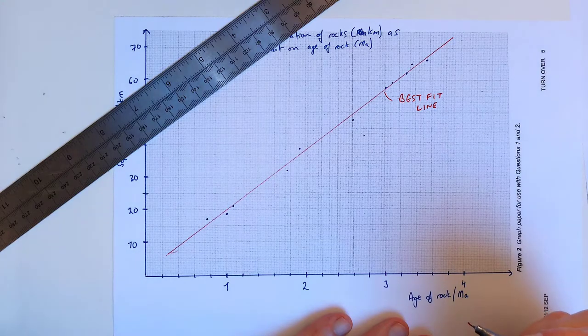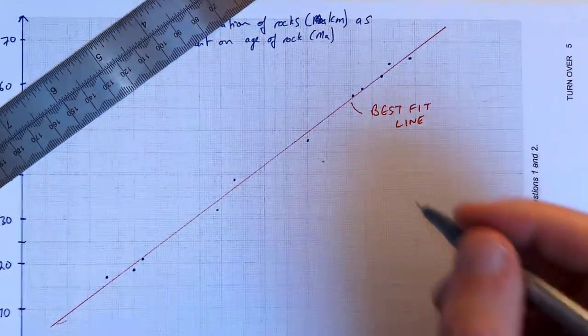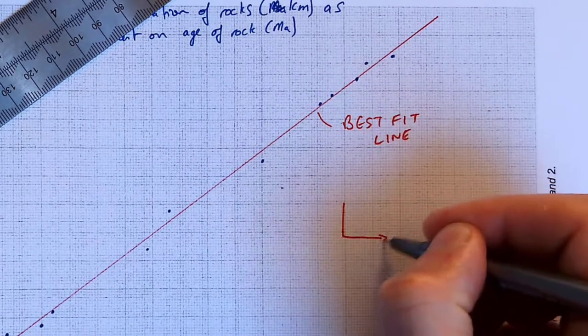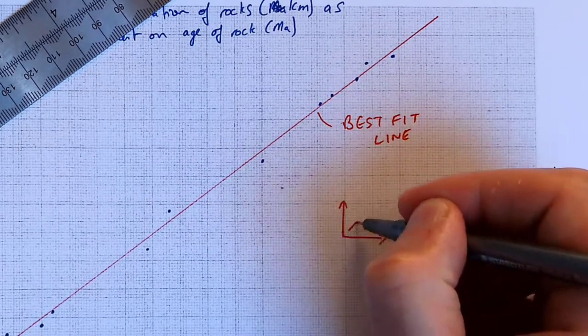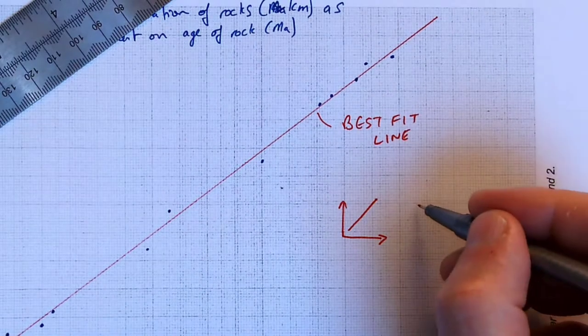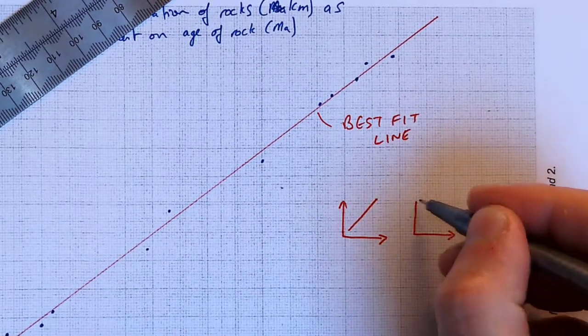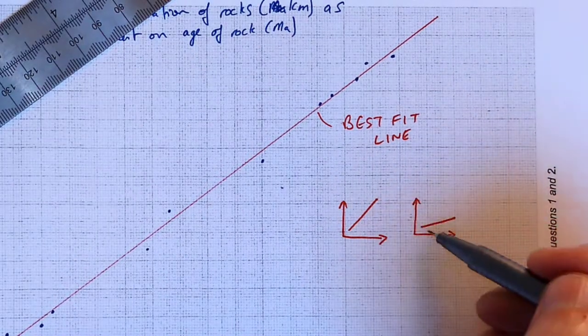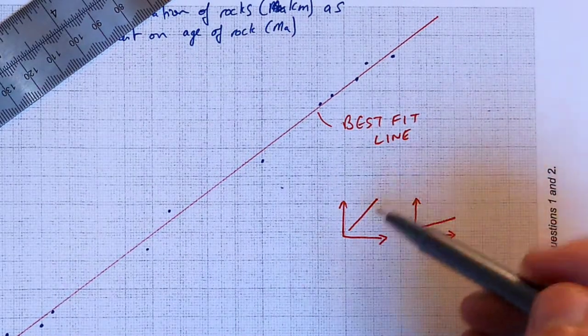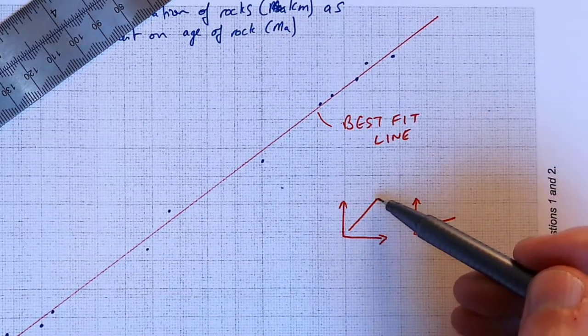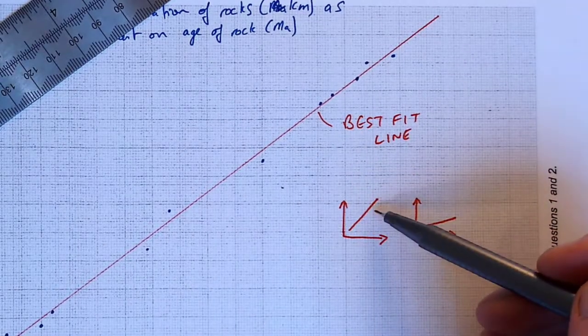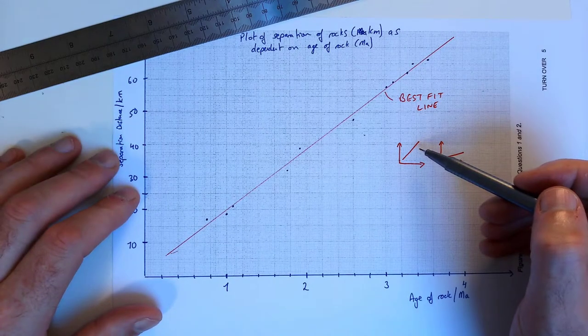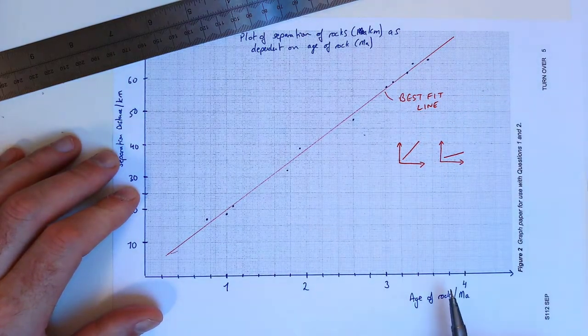And we can get some useful information from the best fit line, in other words the steepness of the line. I could have a line where this could be my graph here and that could be one particular steepness, or I could have a line like this that could be another particular steepness. That steepness is called the slope. Obviously we can see here the higher the slope, the greater the rate of change. So the higher the slope here, the higher my separation distance would be as the rock ages.